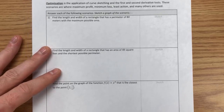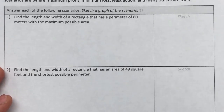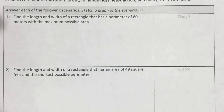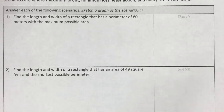Let's jump into one of them and just see how it goes. We're going to find the length and width of a rectangle that has a perimeter of 80 meters with a maximum possible area. We've also been told to sketch a graph of the scenario.